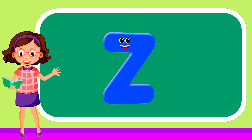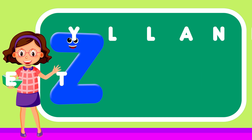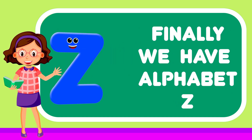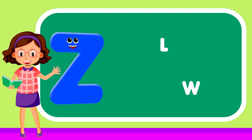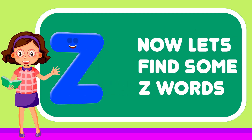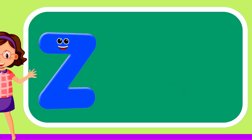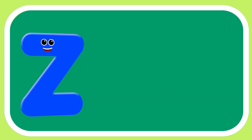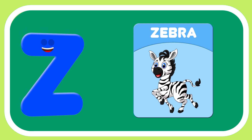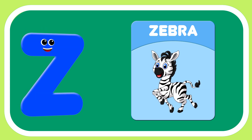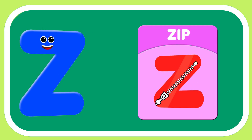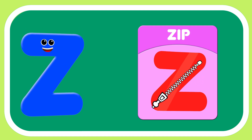Finally we have Alphabet Z. Now let's find some Z words. Oh no! Yeah! Z — Zebra. Zeep zeep.